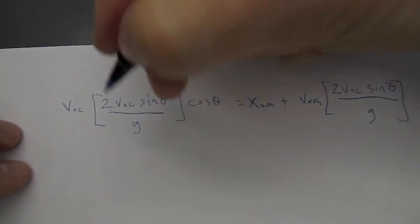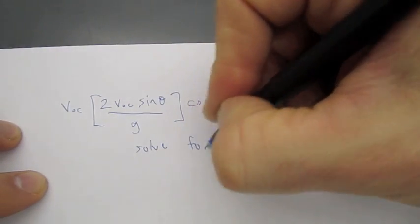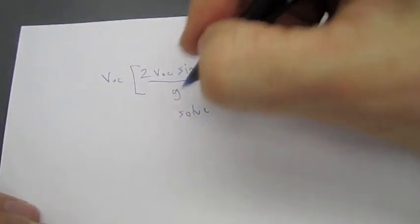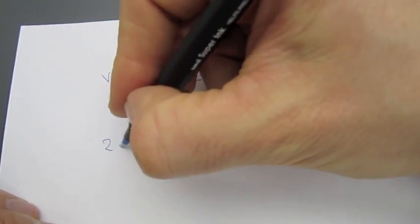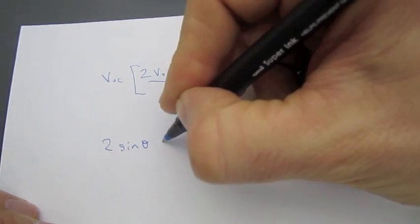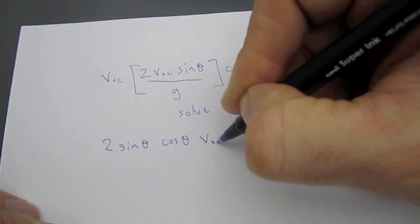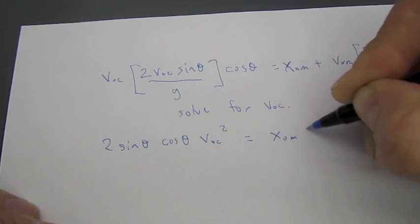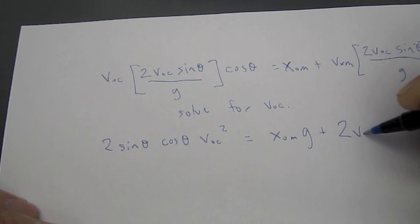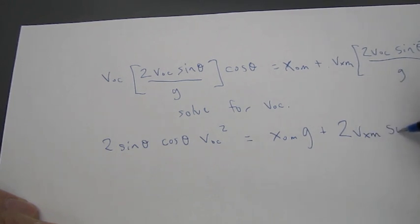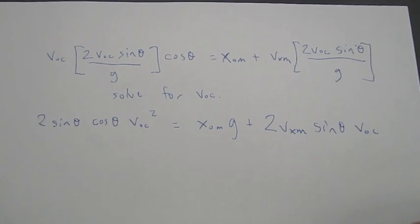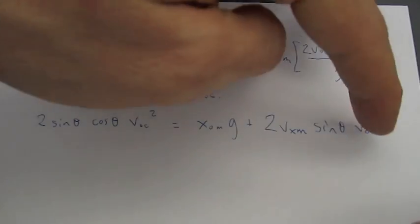Okay, so all we have to do is solve for V sub 0 C. So, rearranging these things a little bit, multiplying through and multiplying by G, I get 2 times sine theta times cosine theta times V 0 C squared is equal to X 0 M G plus 2 times V X M times sine theta times V 0 C. Oops, sorry, I ran off the page there. And then, it looks like we've got V 0 C squared and a V 0 C. We're going to have to use the quadratic equation to solve this.